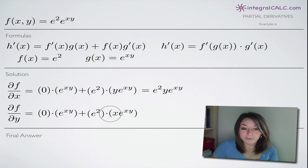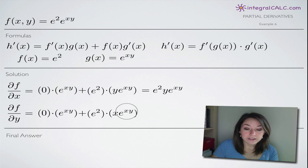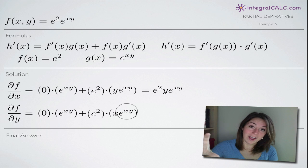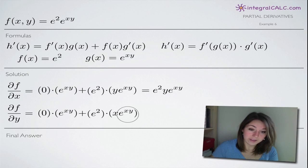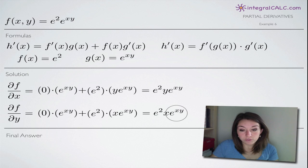When we take the partial derivative with respect to y, we treat y as the variable and x as the constant. If x is a constant — say it's 5 — then instead of e to the xy we'd have e to the 5y. Taking the derivative with respect to y, that 5 comes down in front as a coefficient: 5e to the 5y. But 5 is representing our x, so we replace it: xe to the xy. That is our partial derivative of g of x with respect to y, and our final answer is e squared times xe to the xy.